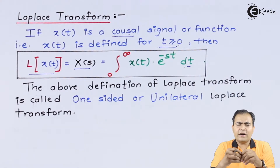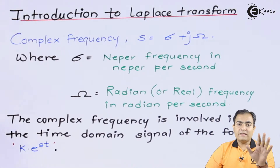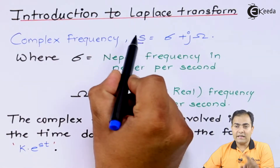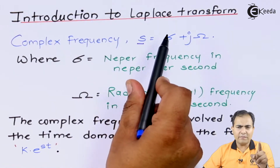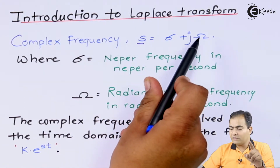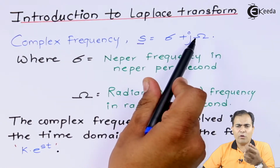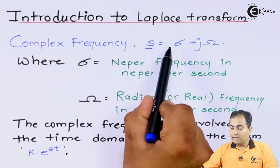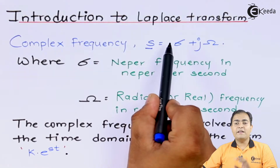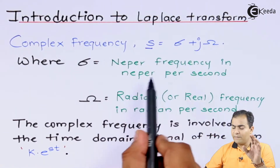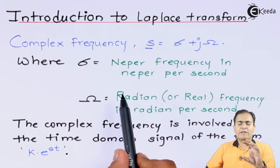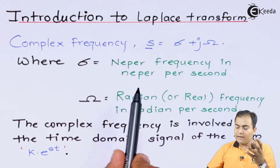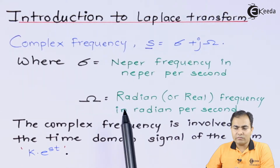The complex frequency S is a combination of a real part and an imaginary part. The complex frequency is represented by S in the exponential part. S is the combination of the real part, which is sigma, and the imaginary part, which is omega. This omega is represented by the ohm value. Sigma is the neper frequency, calculated in nepers per second, and omega is the radian frequency, calculated in radians per second.